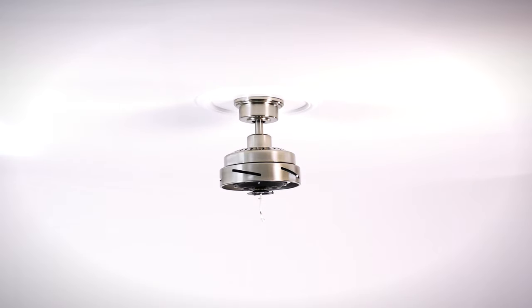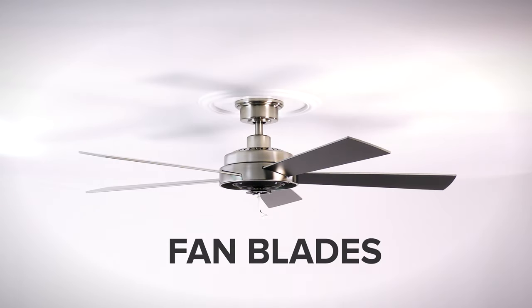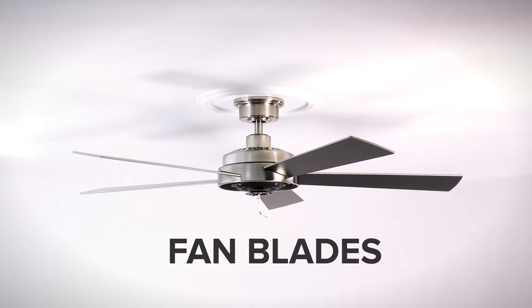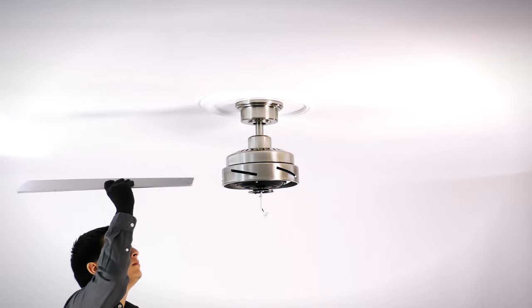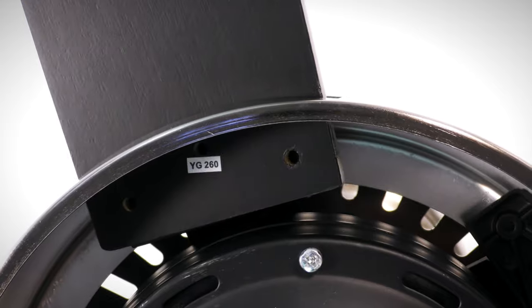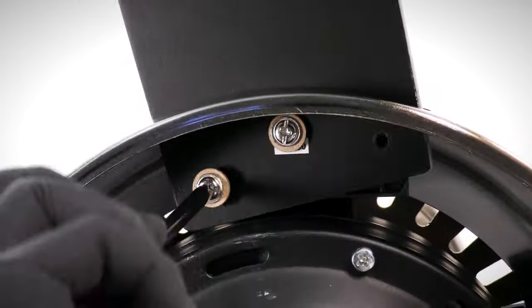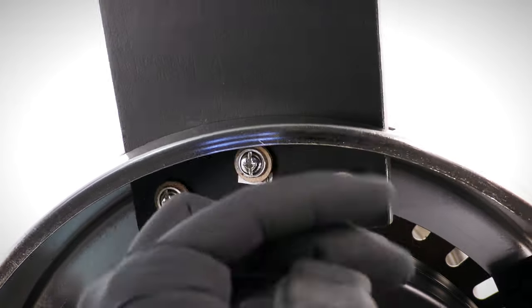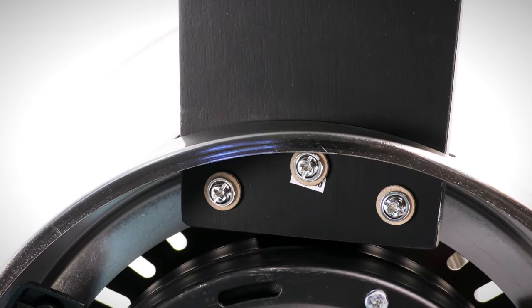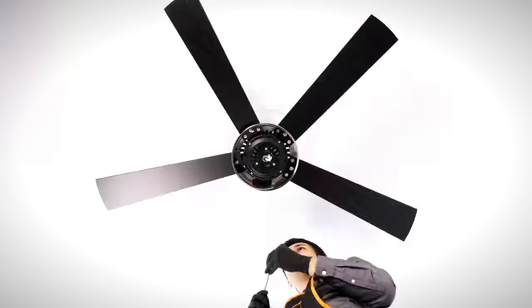The fan blades are now ready to install. Bring a reversible fan blade up to the motor and slide it into one of the slots with the desired side facing down. Align the holes, then secure it in place with three blade attachment screws. Repeat the process for the remaining blades.